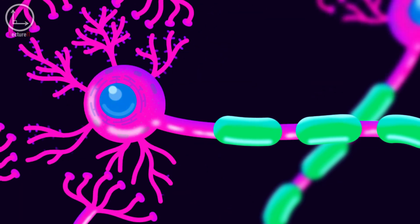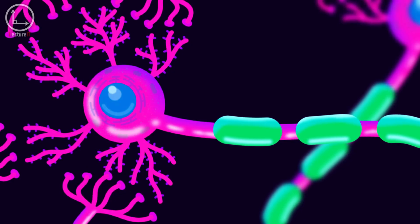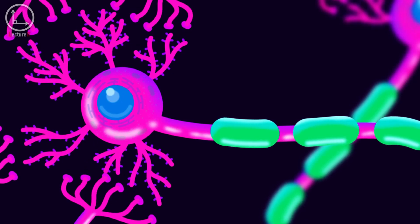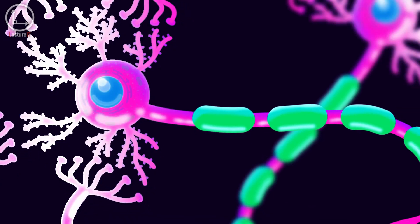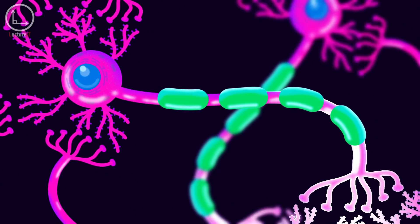For example, they promote the growth of new dendritic spines, which are small protrusions on neurons that receive synaptic inputs. The formation and strengthening of these spines are crucial for the long-term stability of synaptic connections.